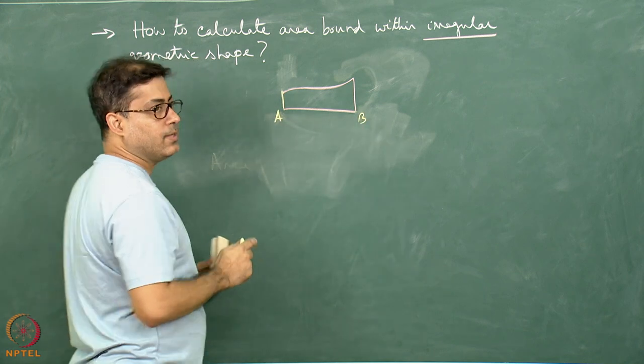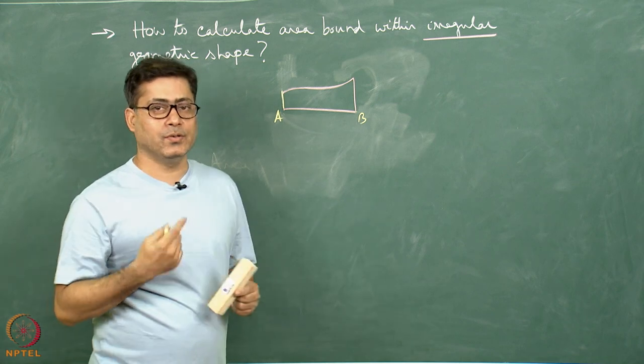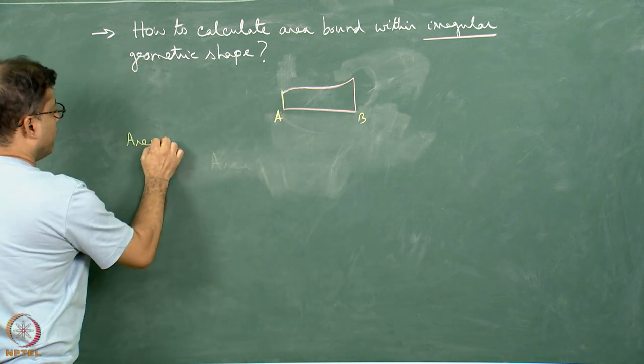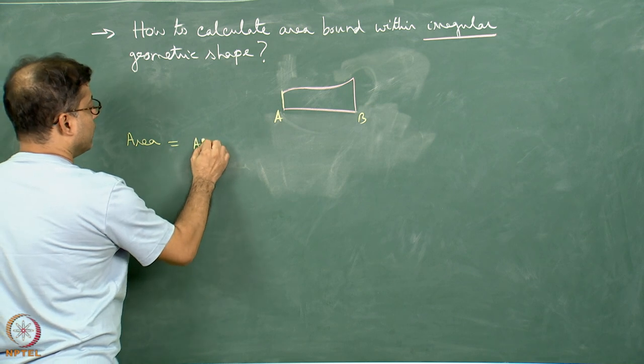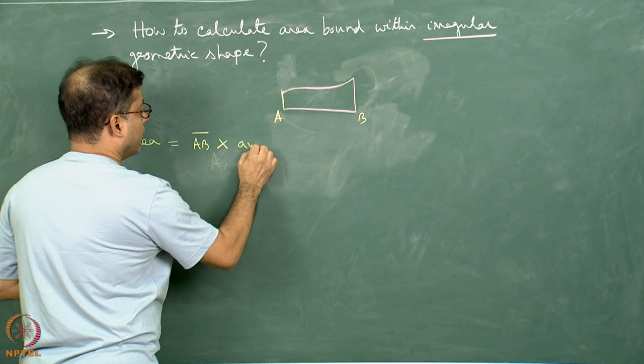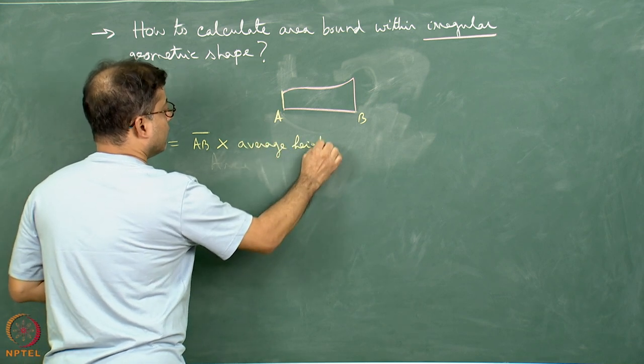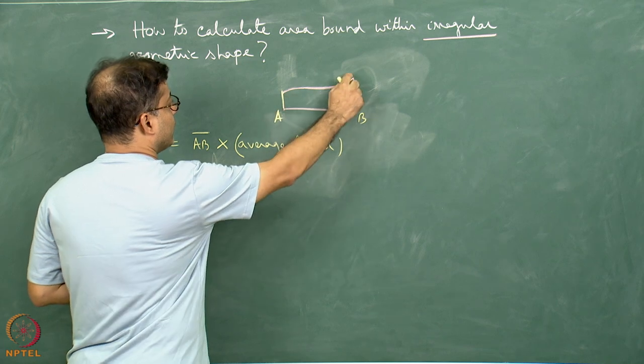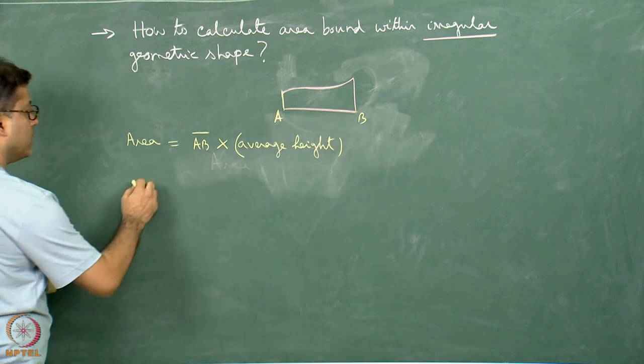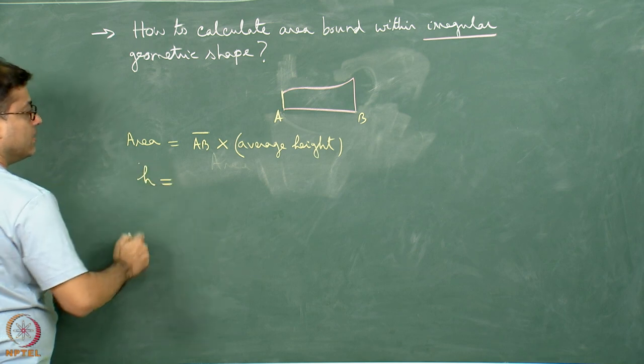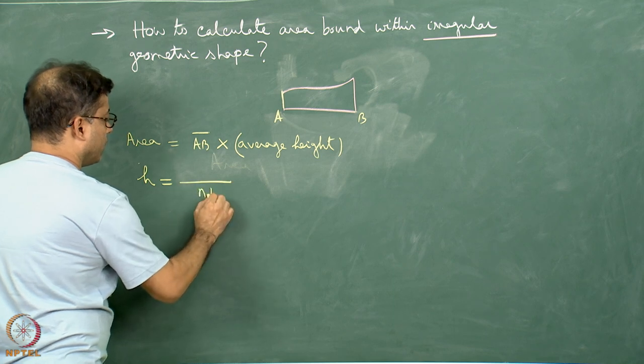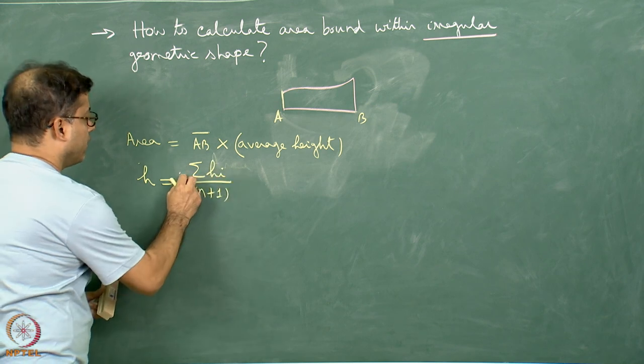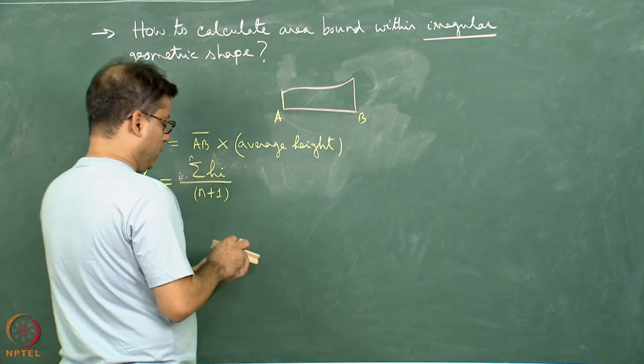On this line AB, and here I am considering these three are straight lines. In subsequent problems, we will see that none of these lines are straight. Now we write down this formula: area is equal to the AB length multiplied by the average height. This average height, what is that? From AB, how much is the average height of this curve? This average height h can be written as (Σh_i)/(n+1), where i runs from 1 to n.